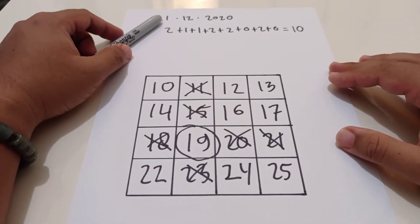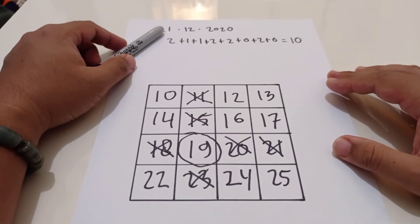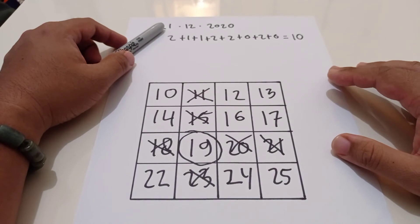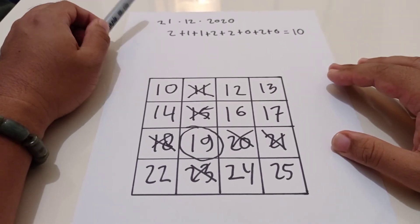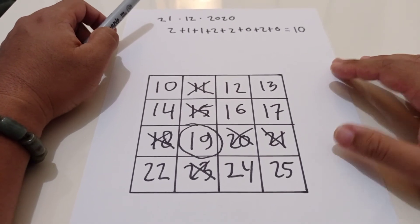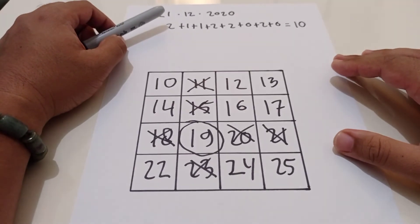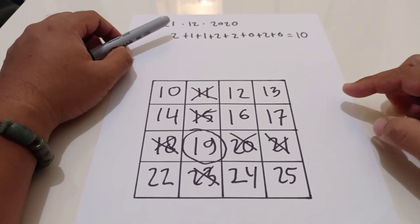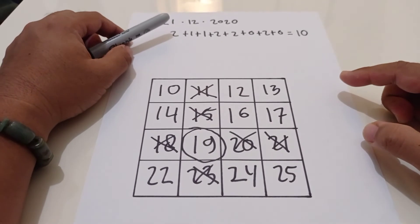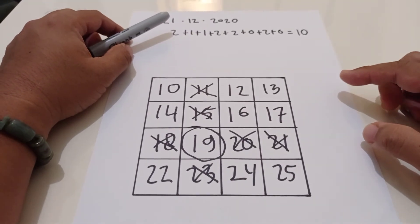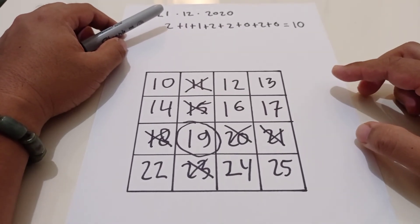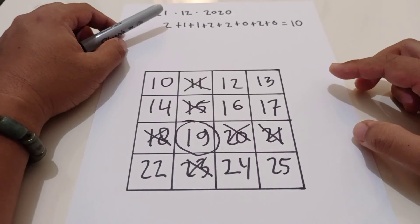You can check on Google by typing Max Maven Wikipedia. So if you succeed, or we succeed, the number that you sum total is the same amount as the age of Max Maven today.